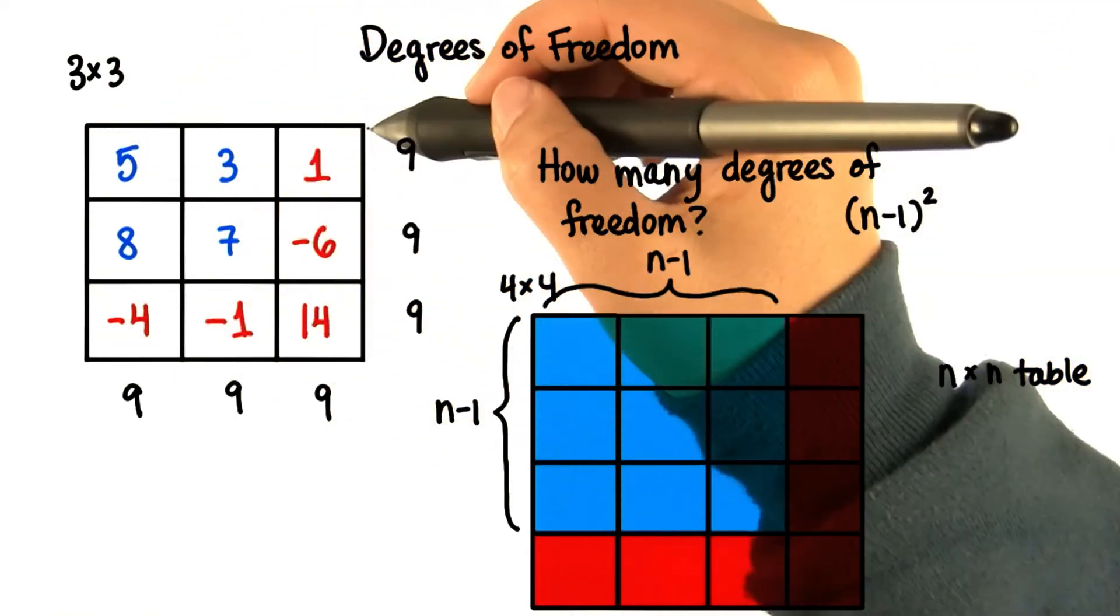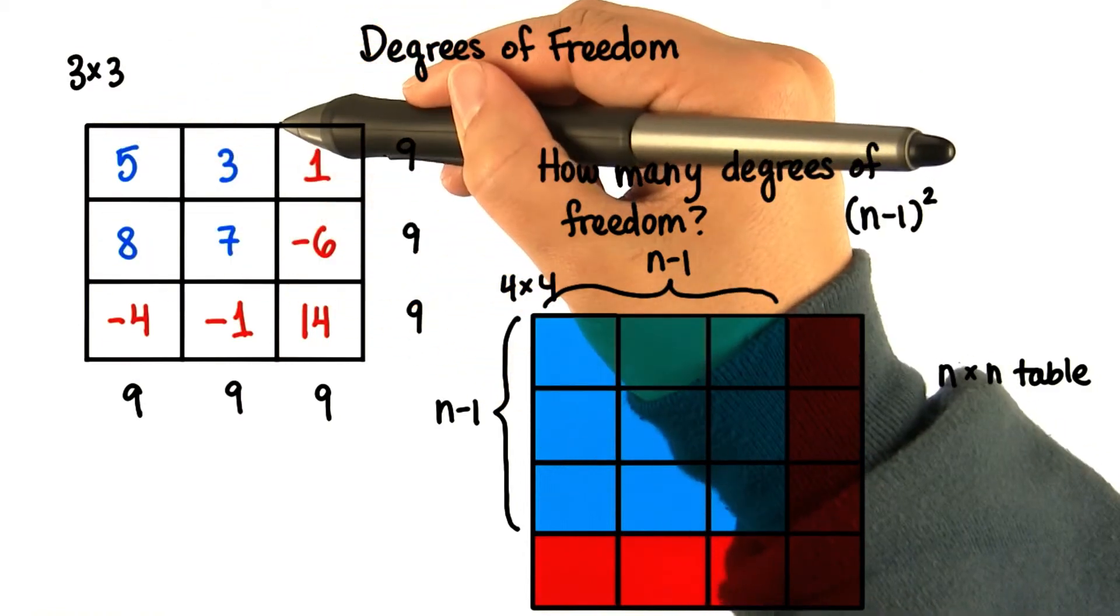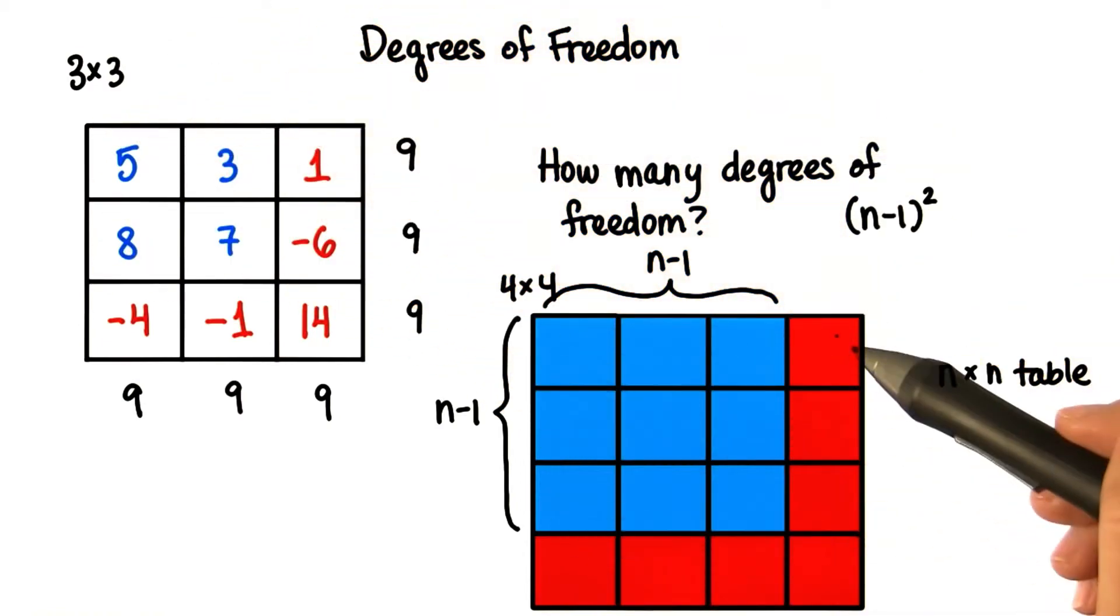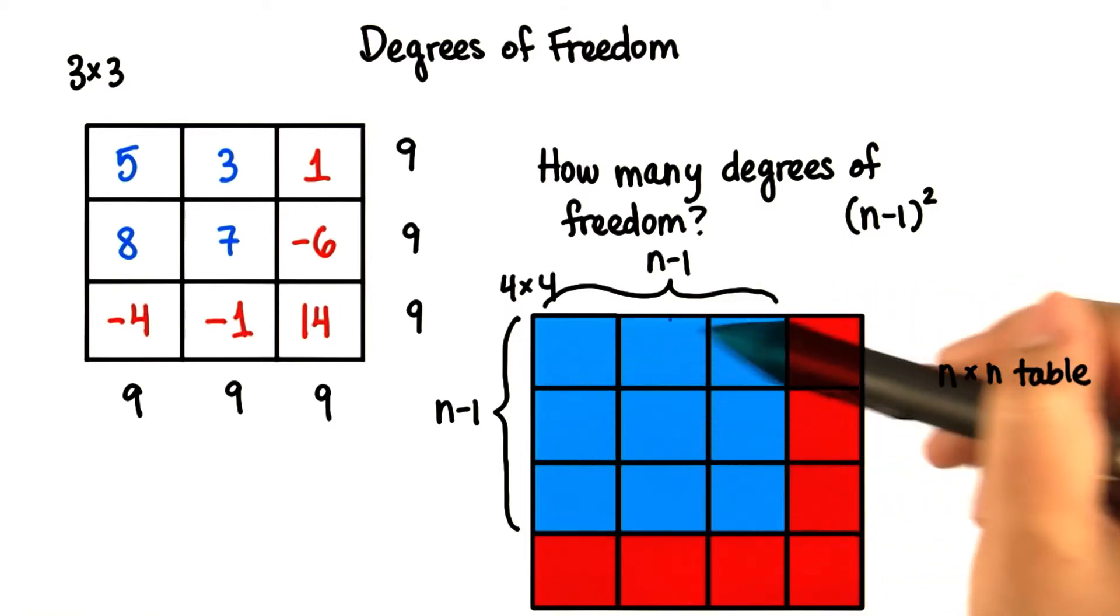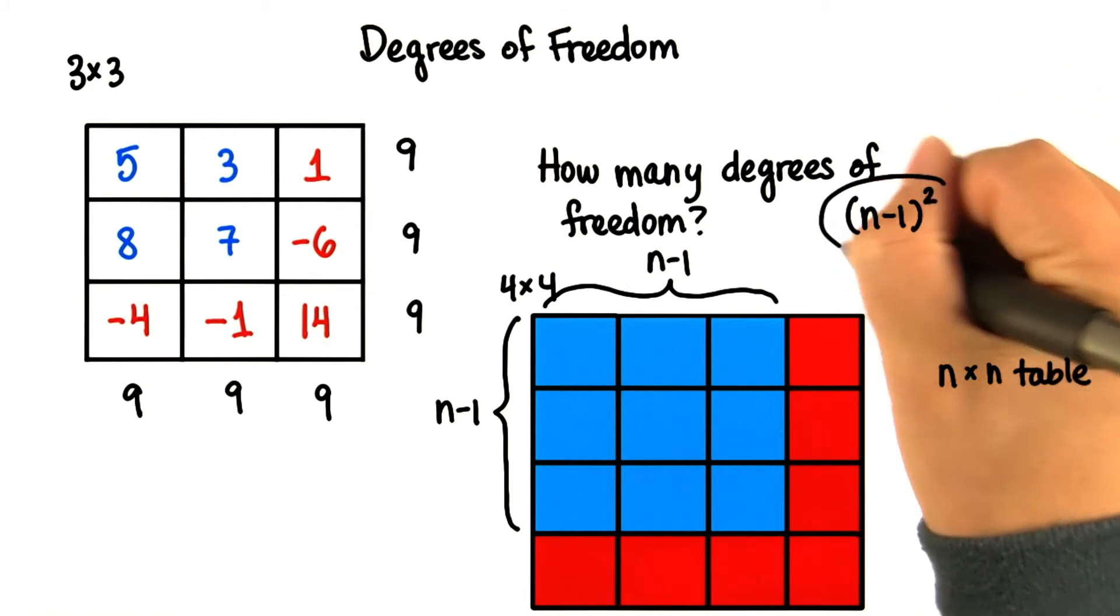So here in this 3 by 3 table, we were able to choose 2 times 2. In this 4 by 4 table, we were able to choose 3 times 3. So when we have an n by n table, we can choose n minus 1 times n minus 1, or just n minus 1 squared.